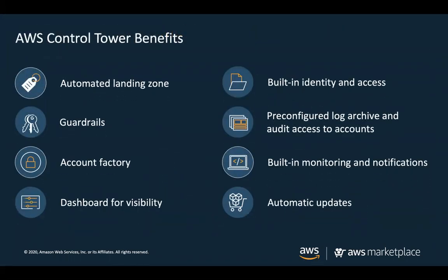AWS Control Tower benefits include: it sets up an automated landing zone, provides guardrails to secure your environment, sets up an Account Factory service catalog product to provision new accounts, organizes a central dashboard for visibility, provides federation to accounts through SSO, sets up log archive and audit accounts, and provides built-in monitoring and notifications. One benefit that sometimes goes unnoticed is automatic updates — you can automatically update your environment with just a click of a button.